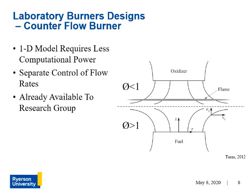The counterflow burner is arranged with the fuel and oxidizer in two opposing jets, creating a planar flame. The benefit of this geometry is that it can mathematically be reduced to one dimension, which lowers the computational power required to model the flame in computer simulations. With separate channels for the fuel and oxidizer, flow rates can be individually controlled so that the flame rests near the stagnation plane, shown by the dotted line — where the momentum of the opposing flows are equal.